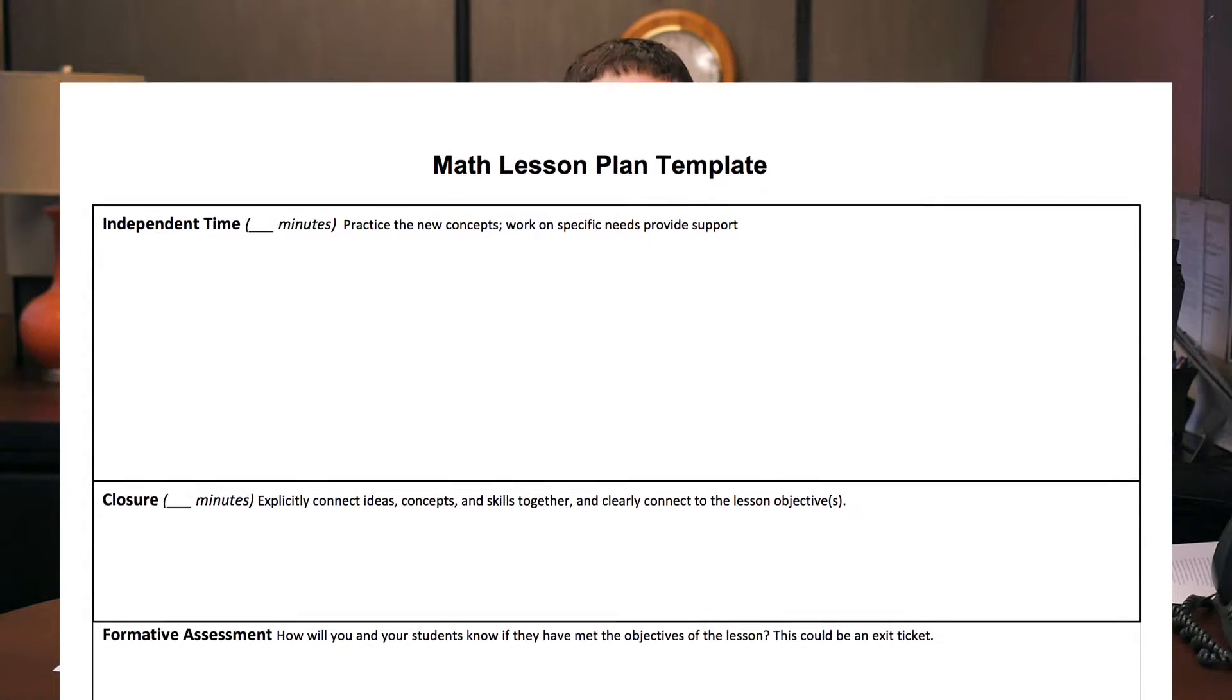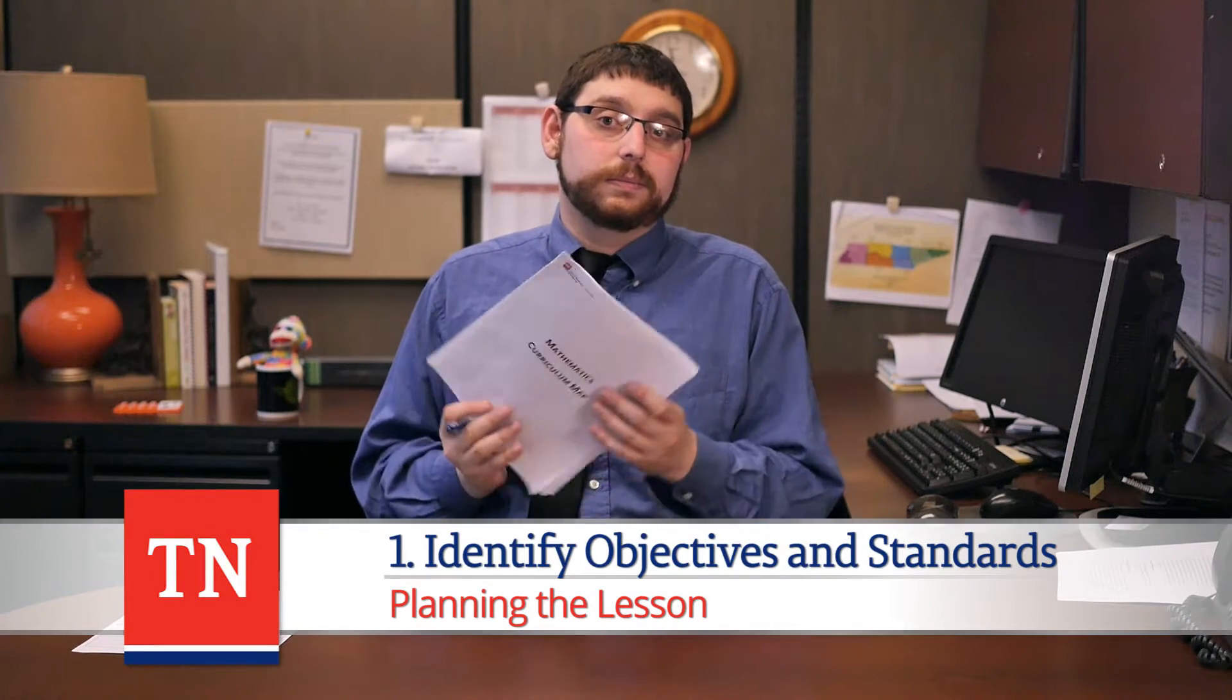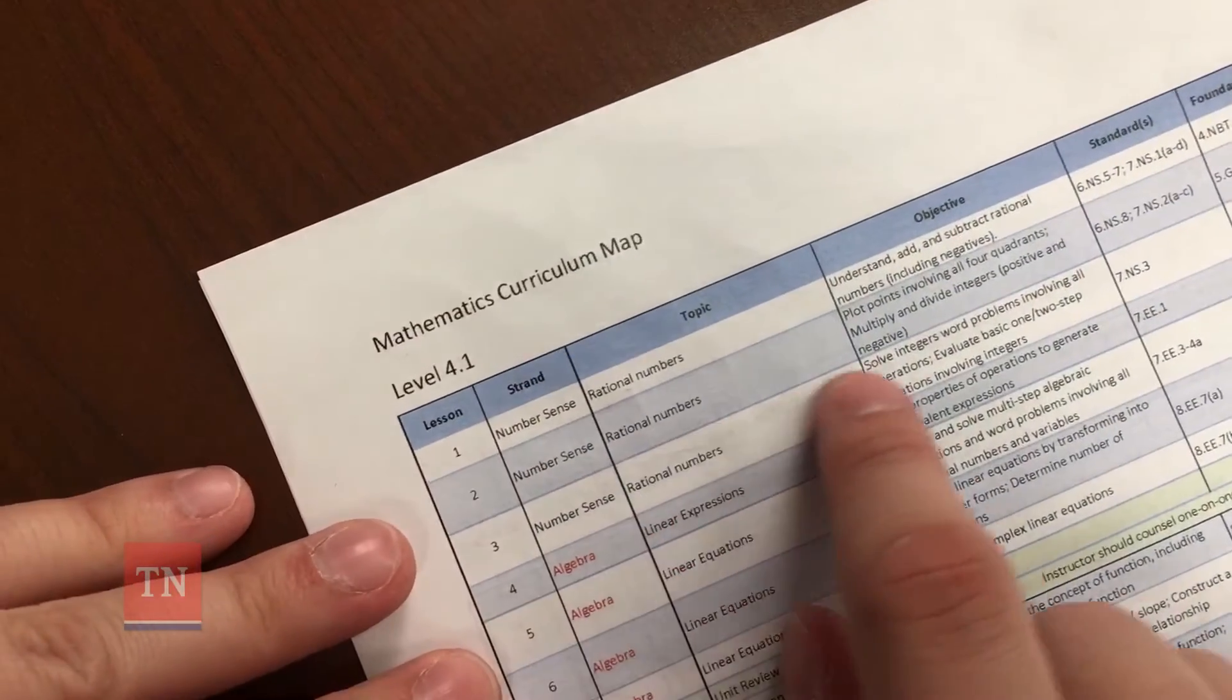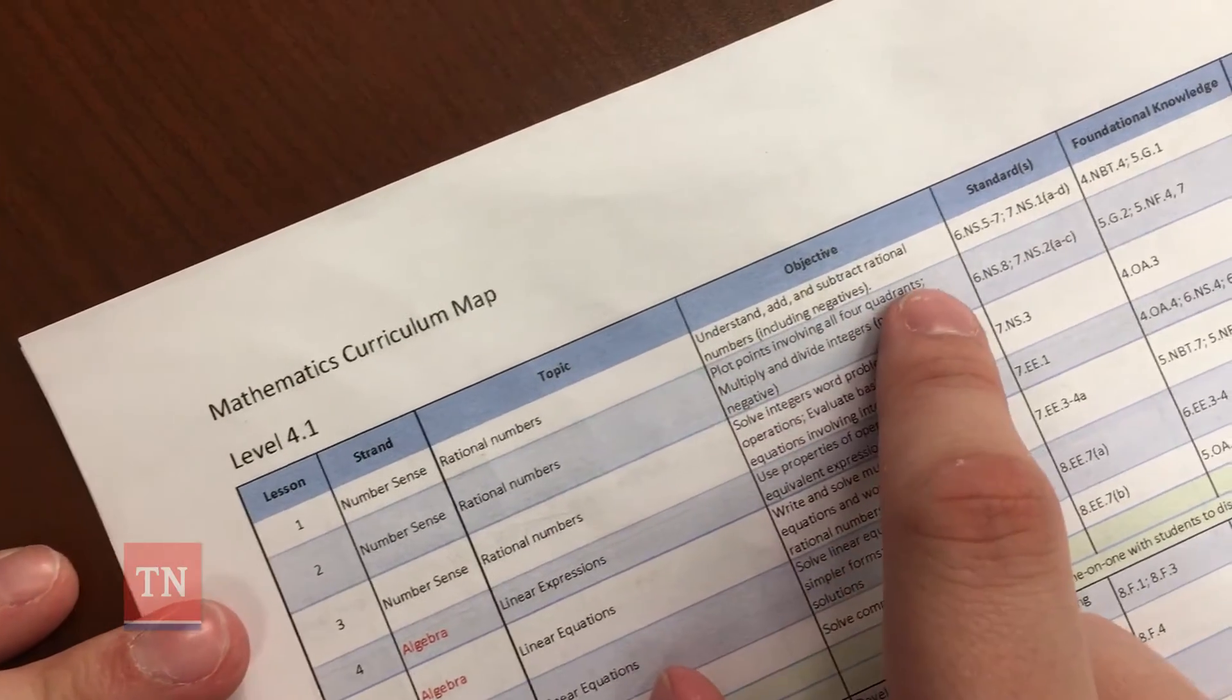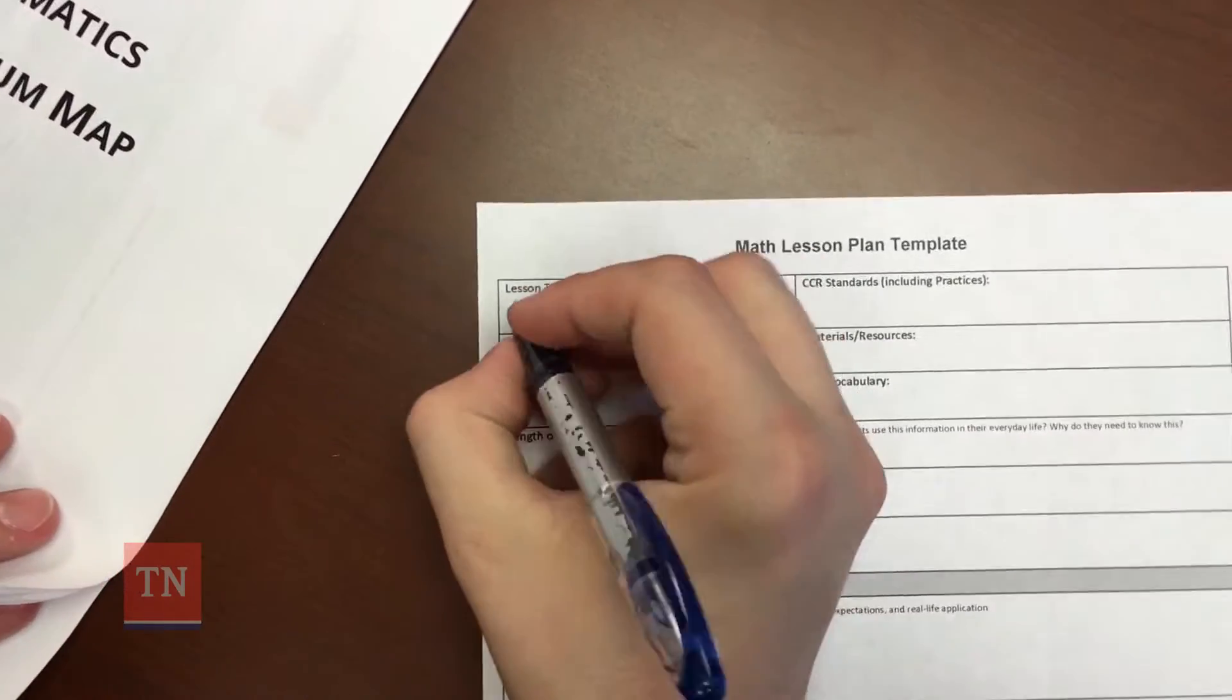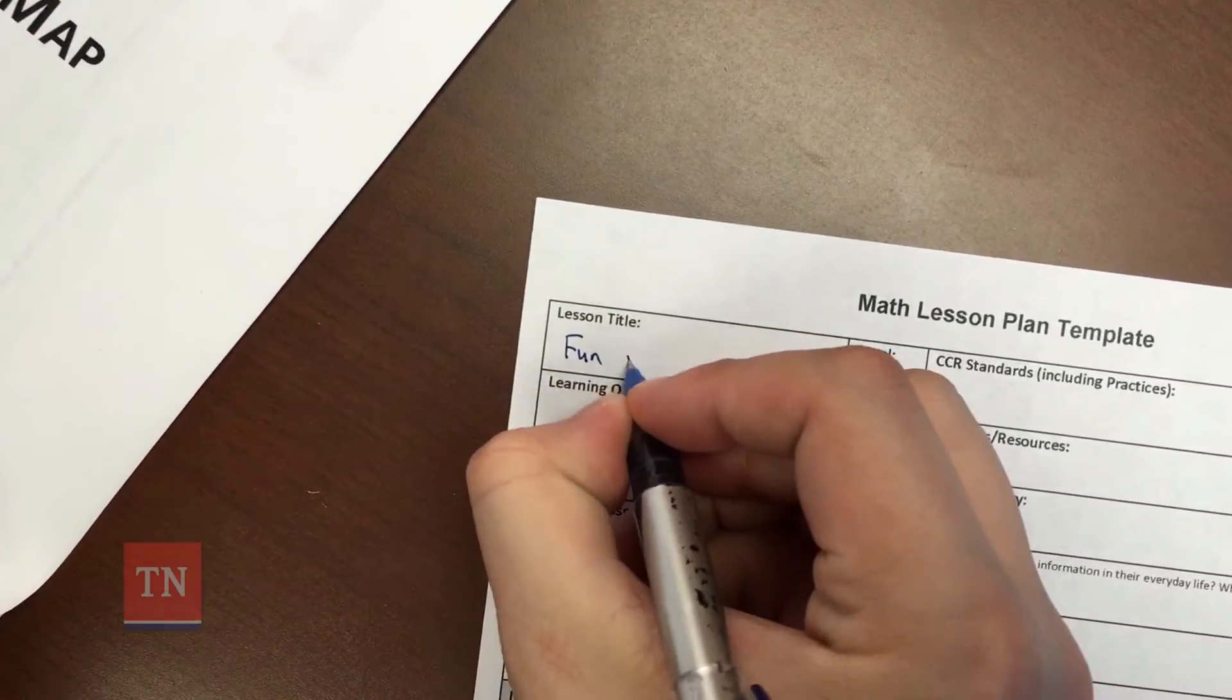I'm going to start outlining the lesson in a new lesson plan template. First, we need to identify what the objectives and standards are for this lesson. The map indicates that the lesson I'm on is this one: Plot points involving all four quadrants and multiply and divide integers. I'm just going to call this fun with integers.